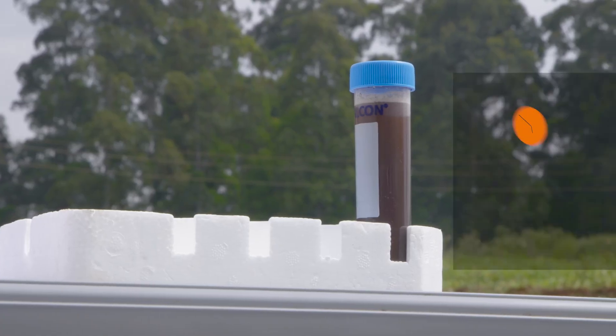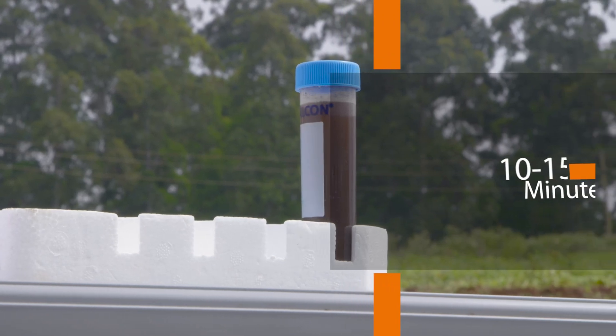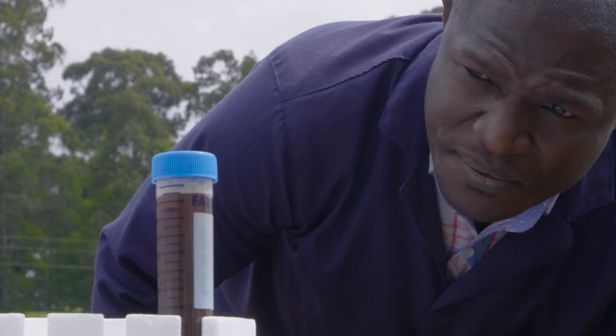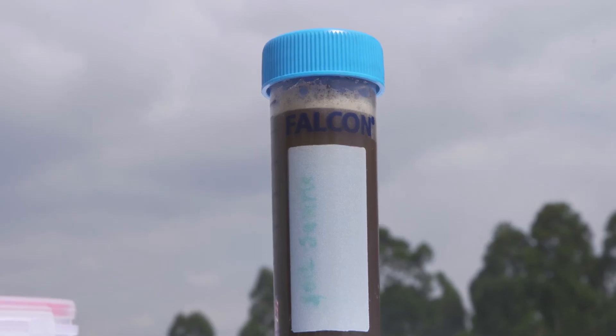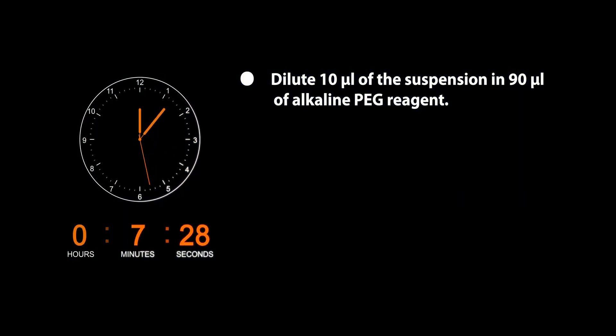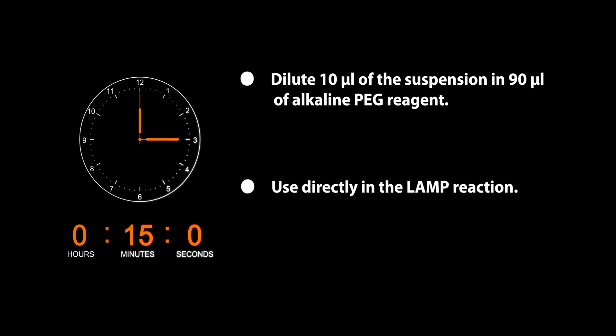Let the soil distilled water mixture sit for 10 to 15 minutes. When it's expected that the sample will show a high Ralstonia infestation, mix 10 microliters of the soil suspension in 90 microliters of alkaline PEG reagent and let it sit for 15 minutes and then use directly in the lamp reaction.